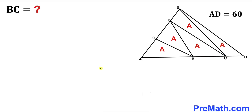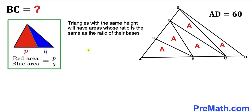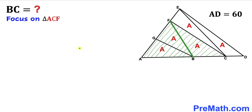Let's get started with the solution and recall a very crucial concept that we'll be using in solving this problem: triangles with the same height will have areas whose ratio is the same as the ratio of their bases. As you can see in this diagram, we have two triangles — one red, one blue — both with the same height, and the ratio of their areas equals the ratio of their bases.